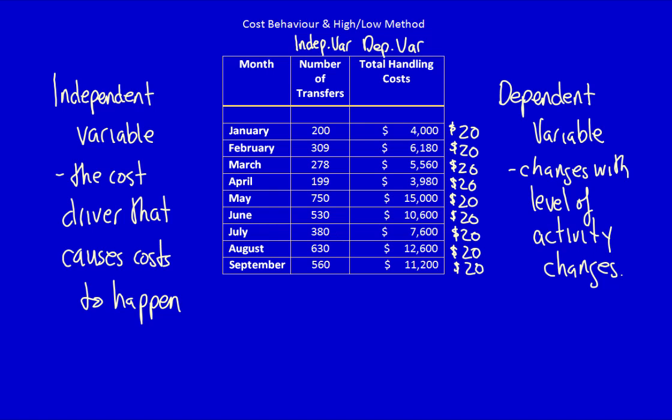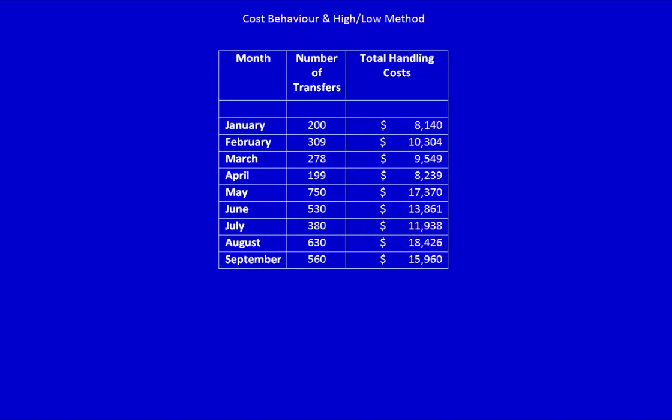What if we saw something different? Is this a mixed cost? To determine that, simply divide the dependent variable total handling costs by the independent variable, what drives the total cost, which is the number of transfers. If it results in the same outcome each time, then it's purely variable. But if the outcome differs every single month, then we know it's a mixed cost, which we have to separate into the fixed and variable components.